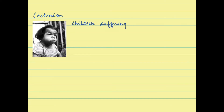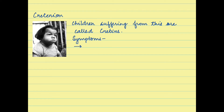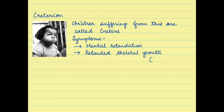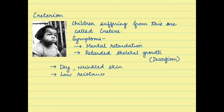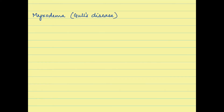Cretinism results due to a decrease in thyroxine levels during childhood. Children suffering from this disorder are called cretins and are normally dwarfs. Symptoms include mental retardation, as thyroxine is an important hormone for brain development. It also causes retarded skeletal growth, resulting in dwarfism, as well as dry wrinkled skin, low resistance to diseases, and a pot belly appearance.